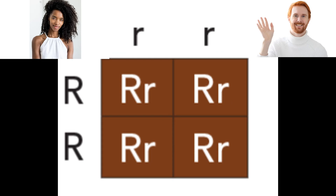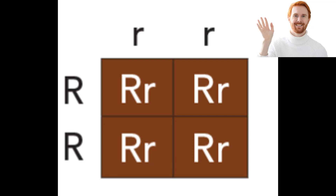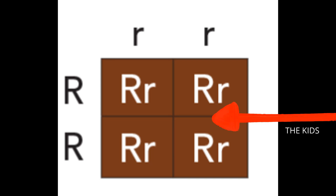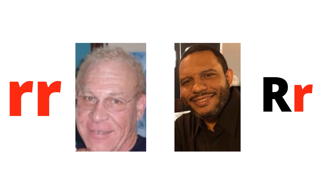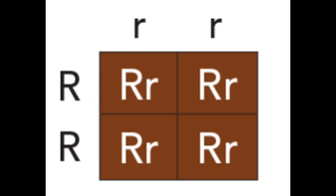In the third example, one parent has uppercase RR — black hair, no recessive gene — and the other parent has two lowercase r's, meaning this parent has red hair. If a person has red hair, they can only pass on the recessive hair trait, so all four children will at minimum carry the red hair trait. To put this in context, my husband's father had red hair, so my husband was a definite carrier — that's all his dad could pass down to him.